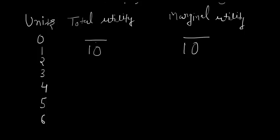By consuming the second burger, would you be getting the same utility? No — you won't be getting the same utility. Imagine yourself eating the first burger when you are very, very hungry. The satisfaction that the first burger gives will not be the same as when you consume the second burger. Maybe by consuming the second burger you get an additional eight utils. When you are getting eight utils from your second unit of consumption, the marginal utility adds up and total utility becomes eighteen — meaning the total utility derived from the first two units gives eighteen utils in totality, while from the second unit you are only getting eight utils.